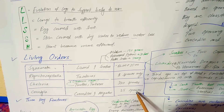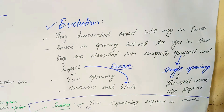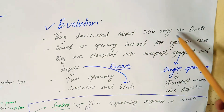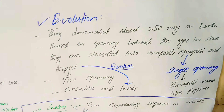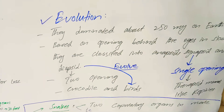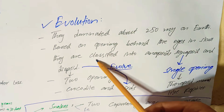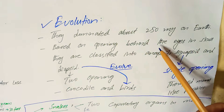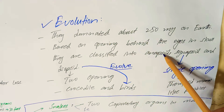Regarding the evolution of reptiles, Class Reptilia dominated the earth 250 million years ago. You know the Jurassic period as an example, during which dinosaurs were dominant on this planet. Based on the openings behind the eyes in the skull, reptiles are classified into three groups: Anapsida, Synapsida, and Diapsida.